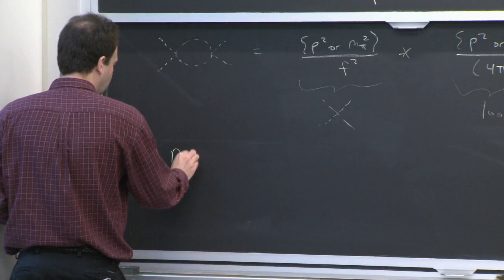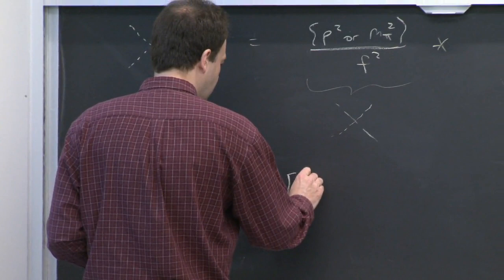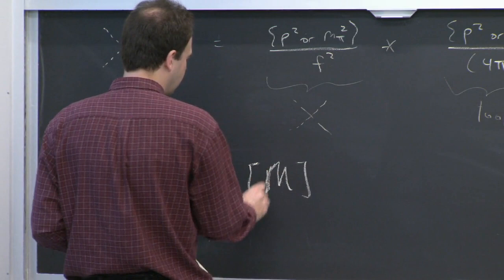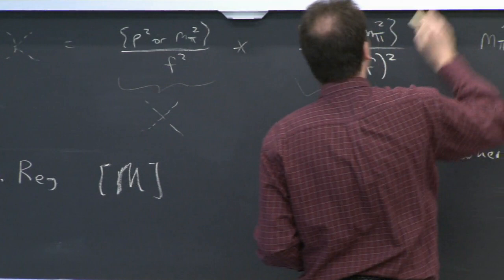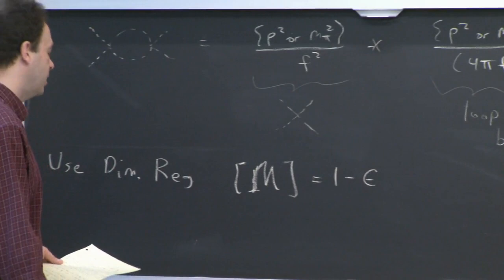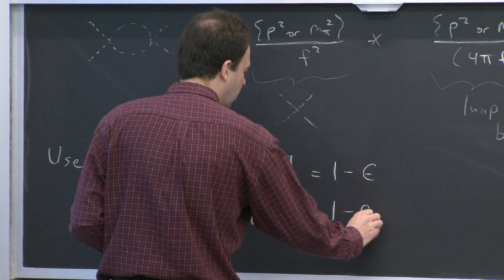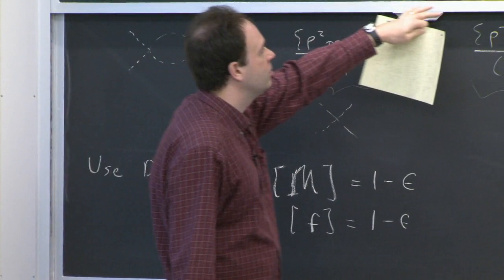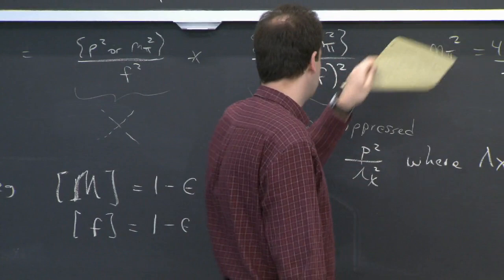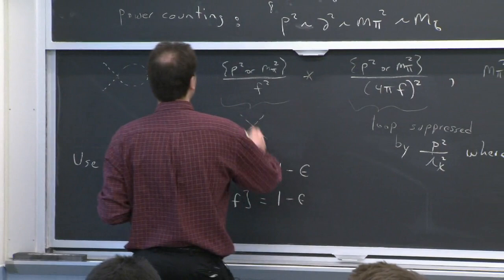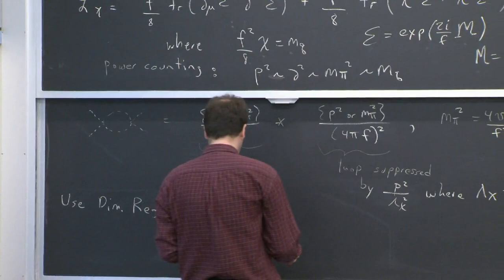It's a little different than gauge theory, but the idea is exactly the same. We look at the dimensions of objects. The capital M field is like a scalar field, so it has dimension 1 minus ε. The decay constant f then has dimension 1 minus ε/2, because the exponential must be dimensionless — the dimension of M should cancel against f. Therefore, f-bare is μ to the minus ε times f, just as you'd do for a gauge coupling.